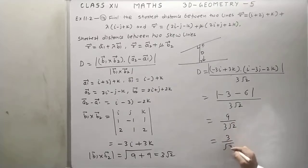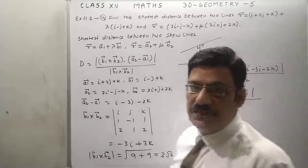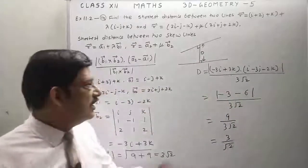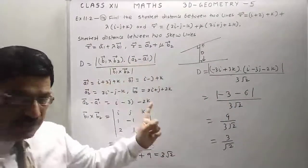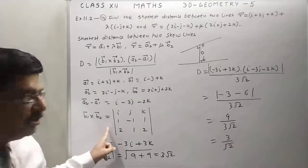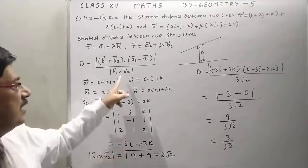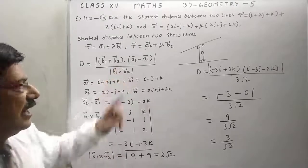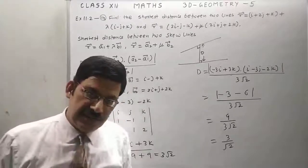So students, this is very important topic of straight line: distance between two skew lines. This is the formula, but you have to find b1 cross b2 and magnitude of that, and substitute the values and you can easily find distance. Thank you.